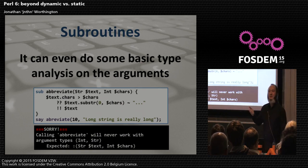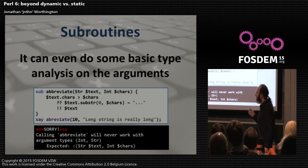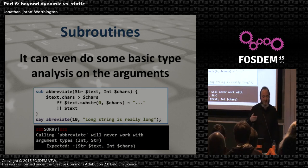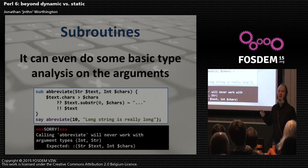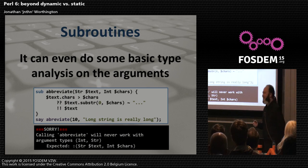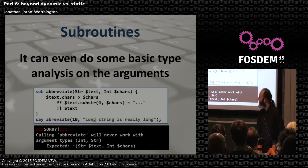It's actually the optimizer that figures this out — which sounds really weird. The optimizer is trying to prove properties about your program to help it optimize. And occasionally, as it does so, it proves your program could never actually work as a side effect. So we kind of get two for one there.